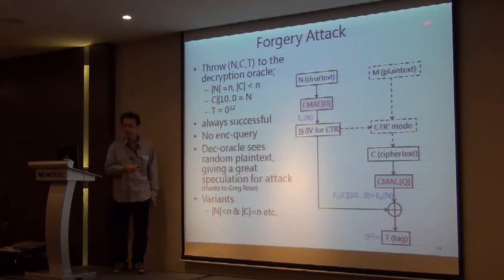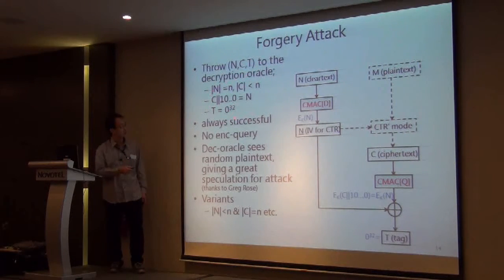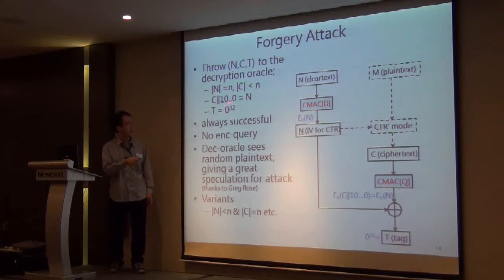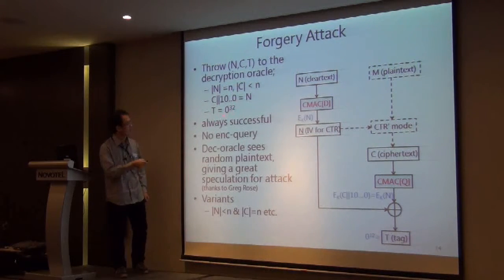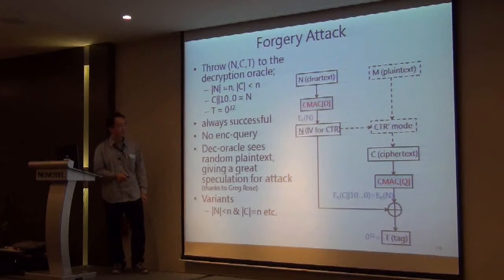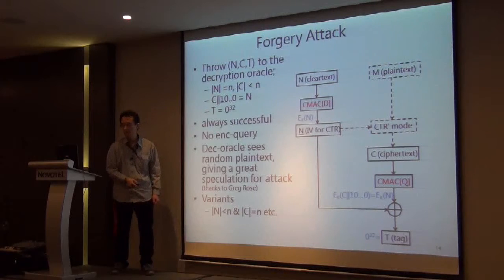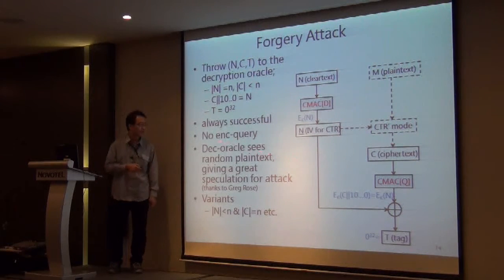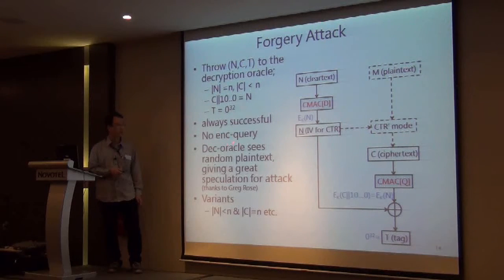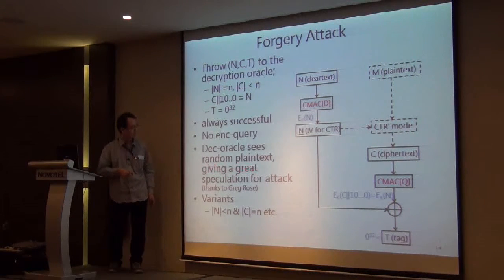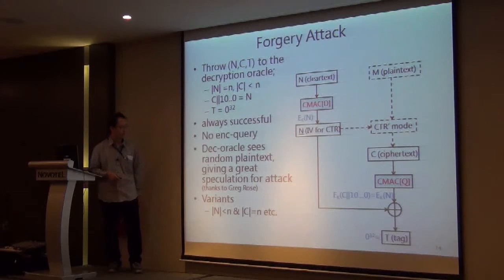The first attack is a forgery attack, which is quite simple. We prepare N, C, T satisfying this relationship, and set the fake tag to be the all-zero value. Since the tag has a final truncation to 32 bits, the tag is a 32-bit all-zero value. Because the CMAC outputs cancel, the tags are always zero and are always accepted as valid. This attack requires no encryption query, so it is quite practical. As a result, the decryption oracle is forced to return random plaintext, which may suggest future attack possibilities.